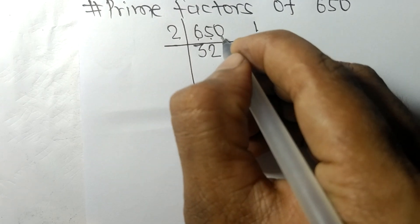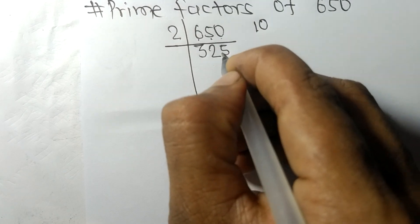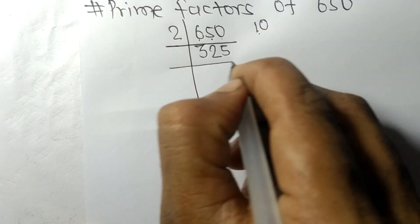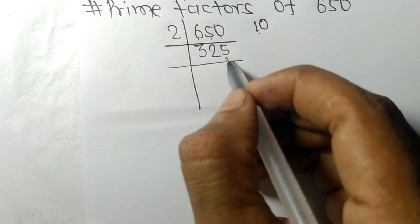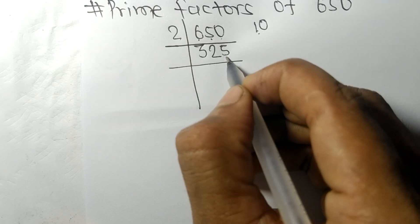10 - 2 times 5 equals 10. Now we got 325, and it ends in 5, so it's divisible by 5.